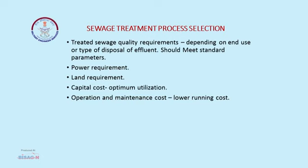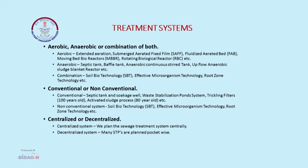How do we decide the sewage treatment process? There are three to four parameters: treated sewage quality requirements, how we are going to use the effluent after treatment, power requirement, land requirement, and capital cost and operation and maintenance cost. Treatment systems, as we all know, can be aerobic, anaerobic, or a combination of both — conventional or non-conventional methods, and centralized or decentralized systems.